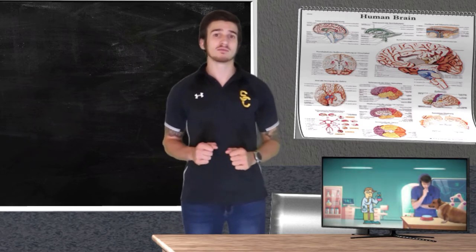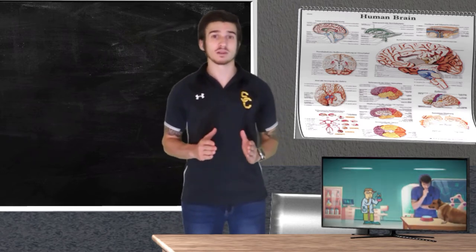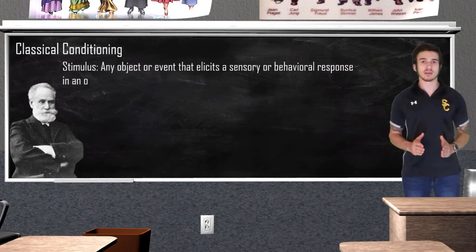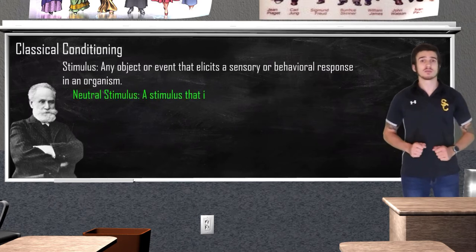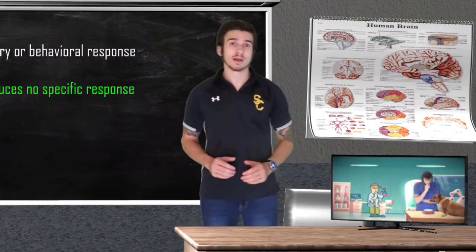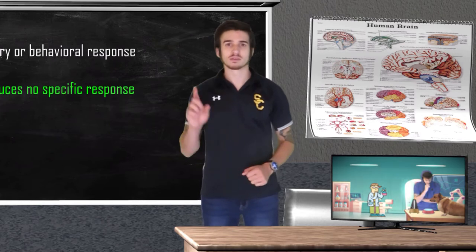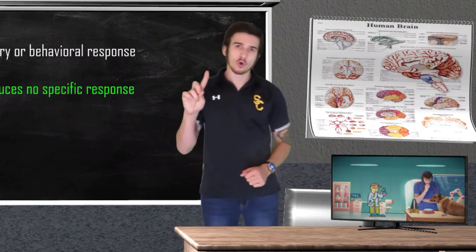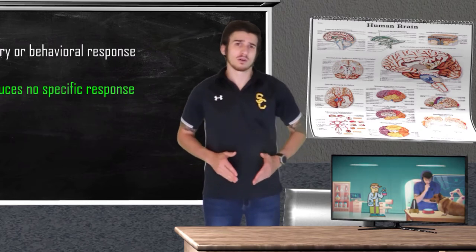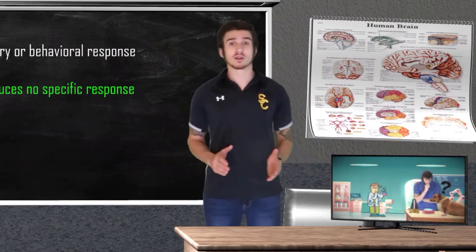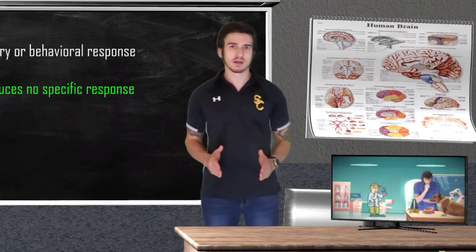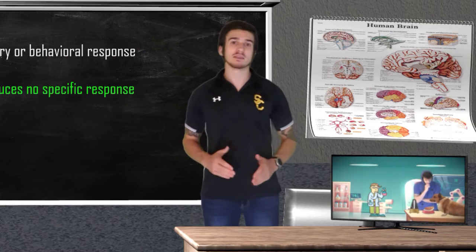The dogs don't need to be taught to salivate as a result of seeing food — that's just an inborn instinctual behavior. In his experiment, Pavlov wanted to see if he could get a neutral stimulus to produce a conditioned response. A stimulus is any object or event that elicits a sensory or behavioral response, so a neutral stimulus is just a stimulus that initially produces no response. Pavlov used a metronome as his neutral stimulus. Now if we were to take the metronome to the dog for the first time and play the sound, other than the dog maybe being curious, we won't see much of a response.